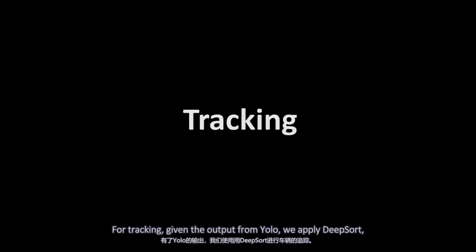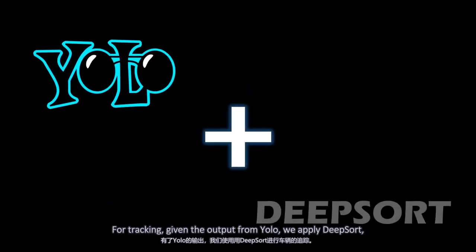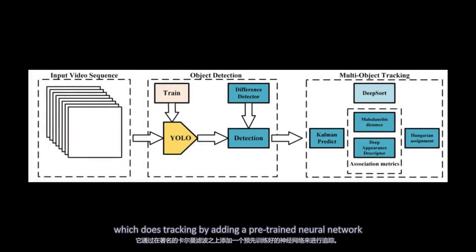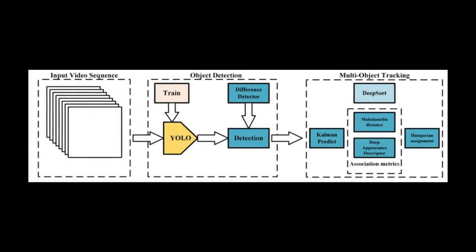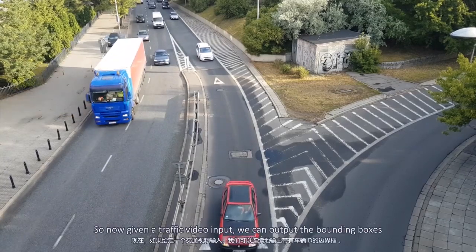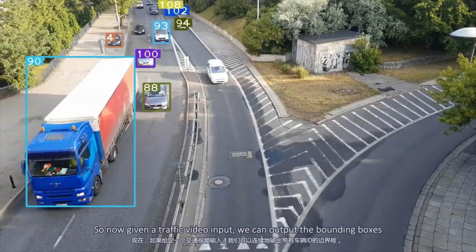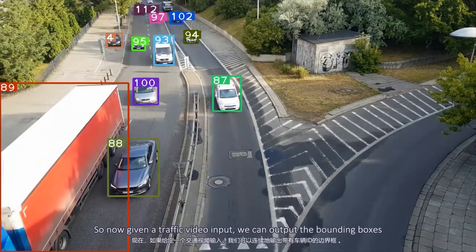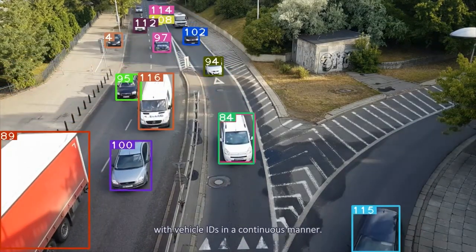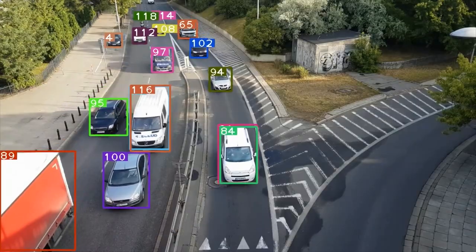For tracking, given the output from YOLO, we apply DeepSort, which is tracking by adding a pre-trained neural network on top of the famous Kalman filter. So now, given the traffic video input, we can output the bounding boxes with vehicle IDs in a continuous manner.